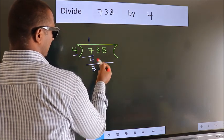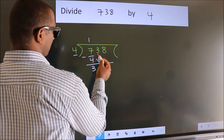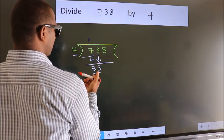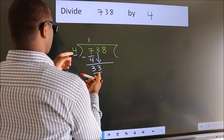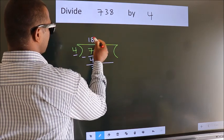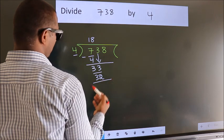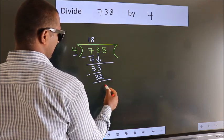After this, bring down the beside number. So 3 down, making 33. A number close to 33 in the 4 table is 4 eights are 32. Now we subtract and get 1.